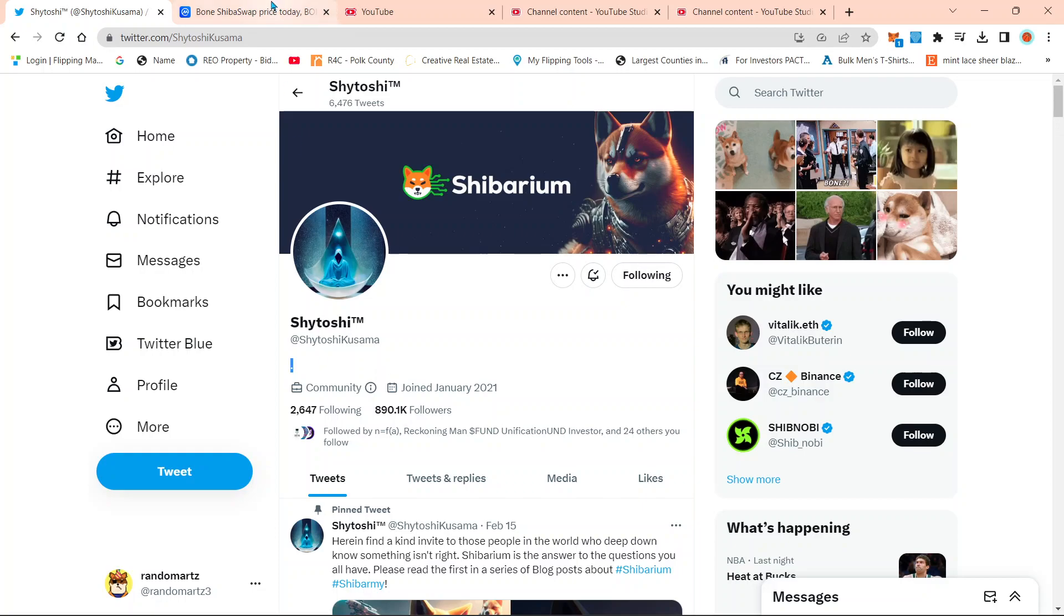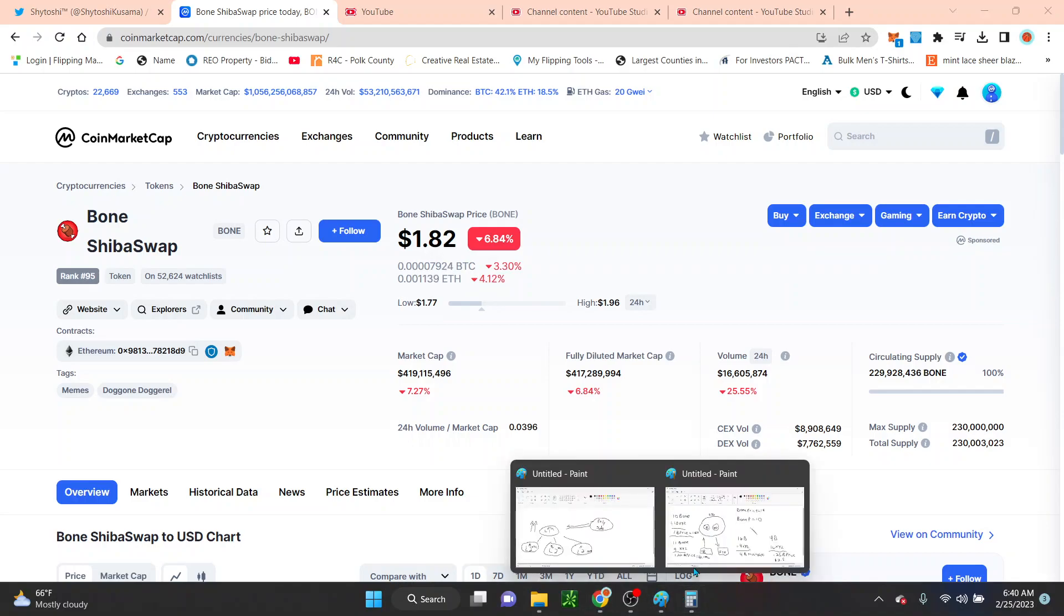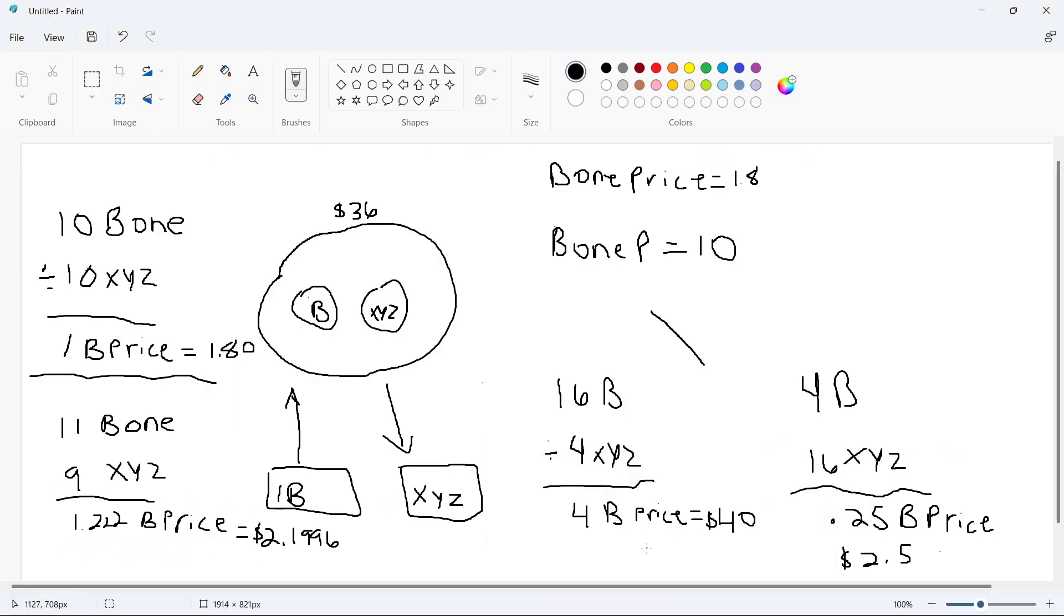So before I get to it, guys, taking a quick look at the price of Bone. Bone is currently at $1.82. And again, with the launch of Shibarium, guys, it is going to give huge opportunities to be able to make some serious money into it. So this video is really just going to be part one. I don't know how many parts I'm going to make, but I'm trying to keep it as short as possible so that way you guys can get the details and the information that you need.